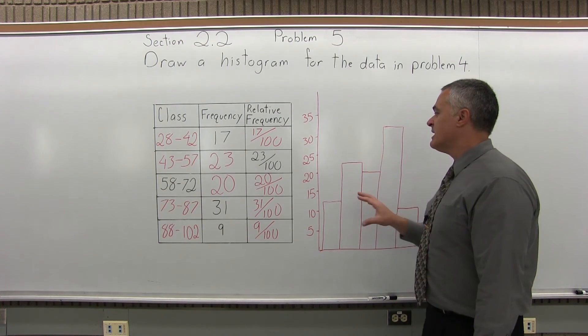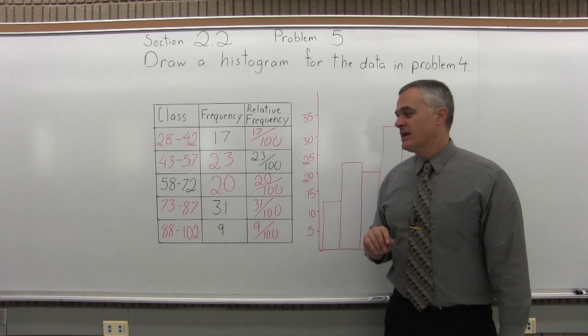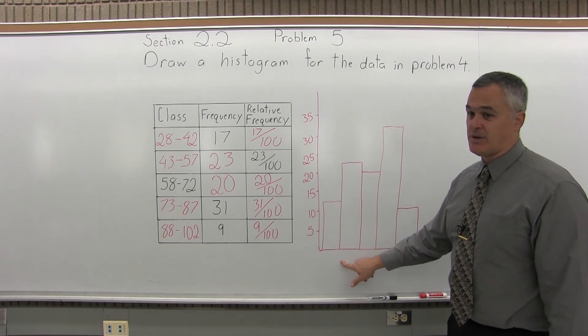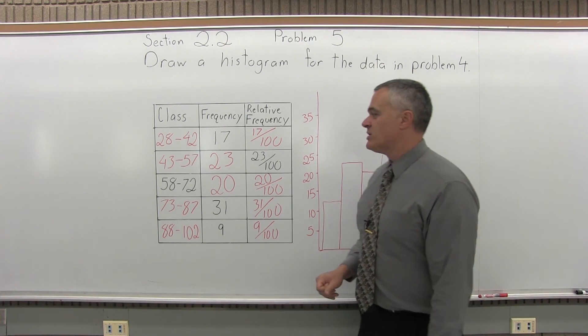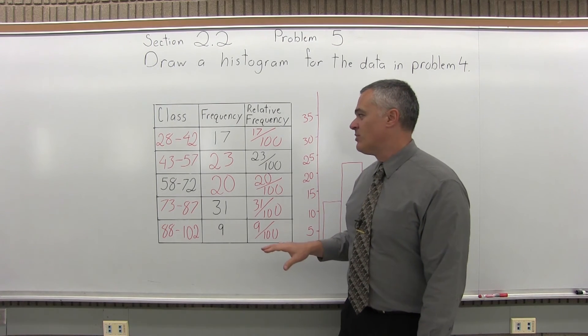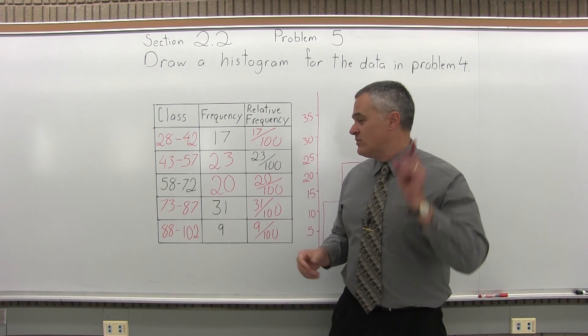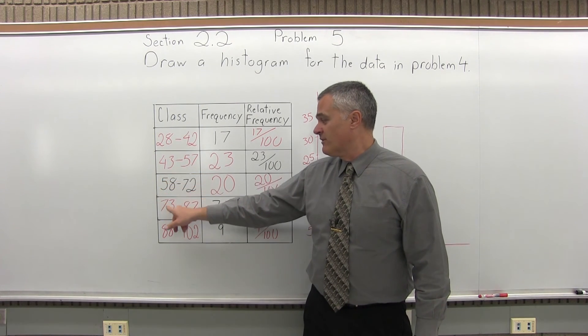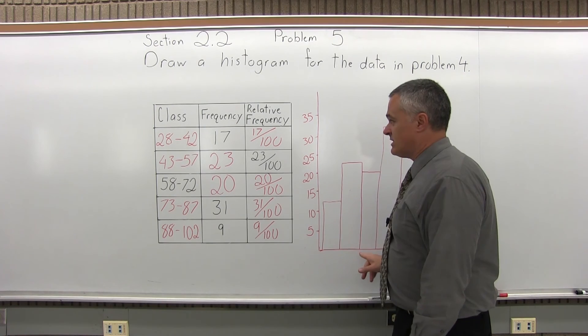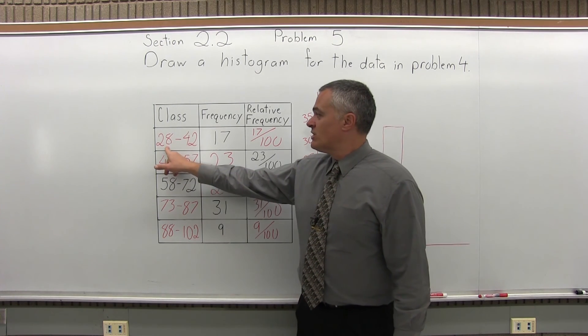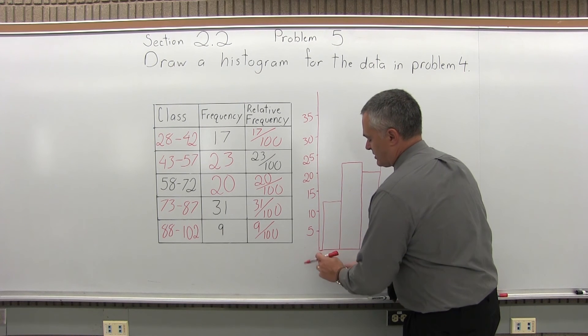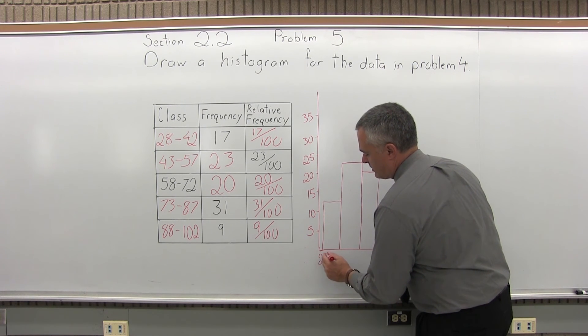So, now I have all the bars at a height determined by that number scale. But I do have to label the bottom of my histogram. I can't leave the bottom blank. So, there are a few different methods for labeling the bottom. This book that we've used is a pretty common one. What they do is they put the lower class limits, the smaller values from each class, right under the edge of each bar. So, the first lower class limit is 28. It goes under the left edge of the first bar. 28.